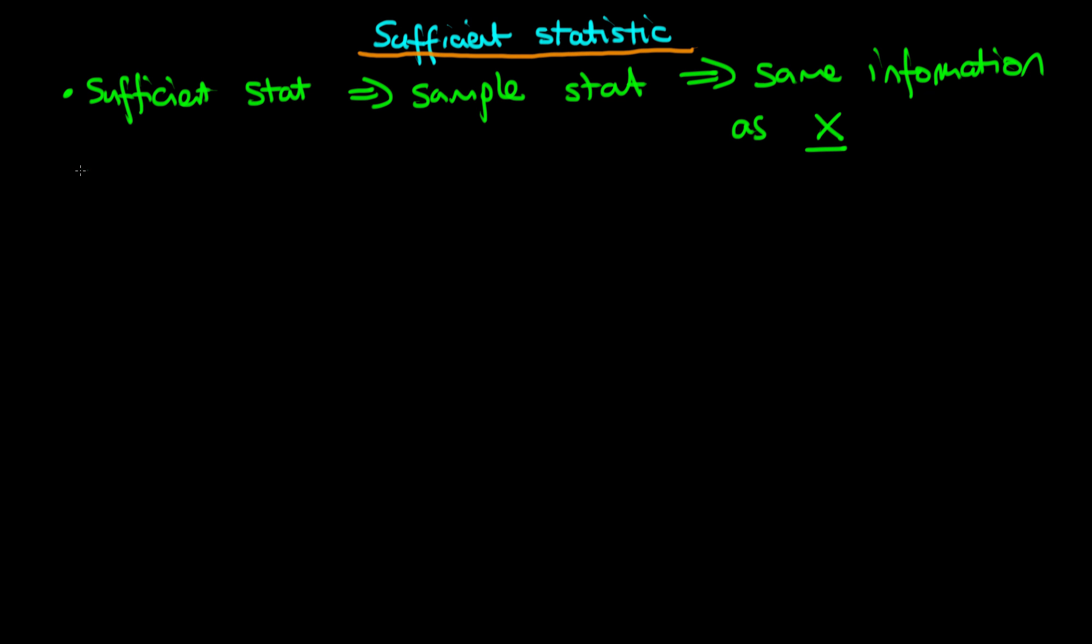So in other words, once we know this summary statistic, which I'm going to call here t of x, some function of x our sample, then the idea is our inferences are the same as those that would be obtained when we condition on our entire sample. So in other words, p of theta, some parameter vector theta given t of x, is equal to p of theta given x itself.